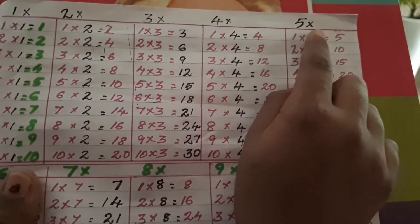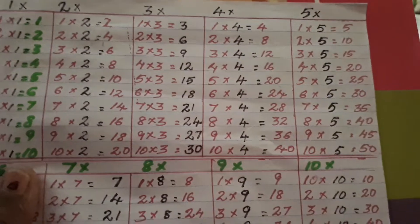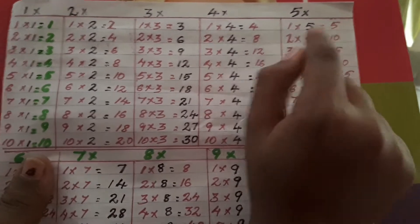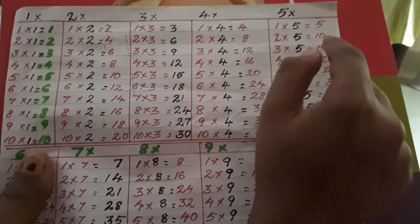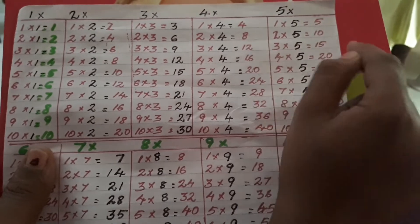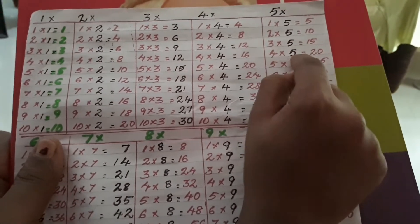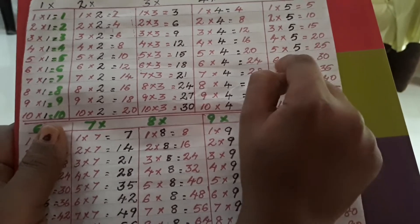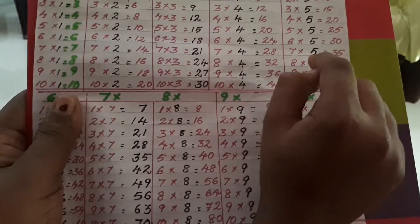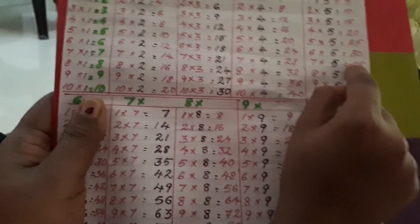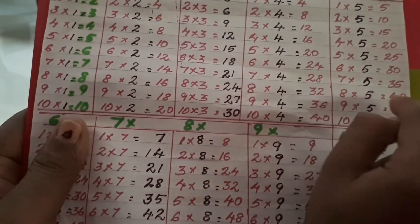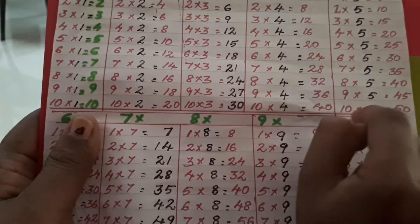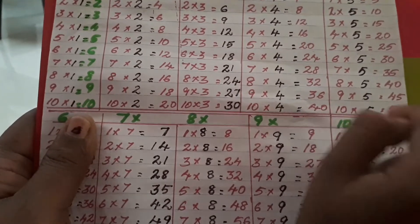Now, let's see table of 5. 1 five is 5. 2 twos are 10. 3 twos are 50. 4 twos are 20. 5 twos are 25. 6 twos are 30. 7 twos are 35. 8 twos are 40. 9 twos are 45. 10 twos are 50.